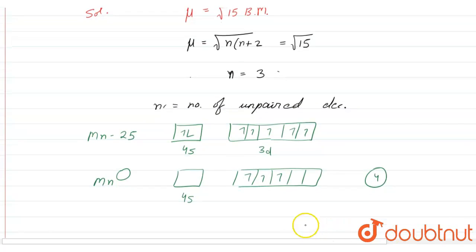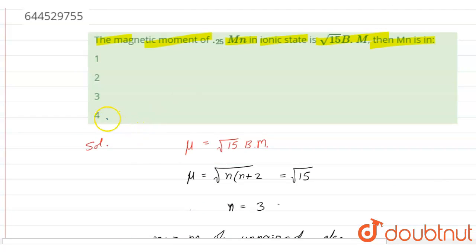And we can say that the manganese is in +4 oxidation state here. So this would be our answer. Out of the four given options, we can say that the fourth option is correct. Thank you.